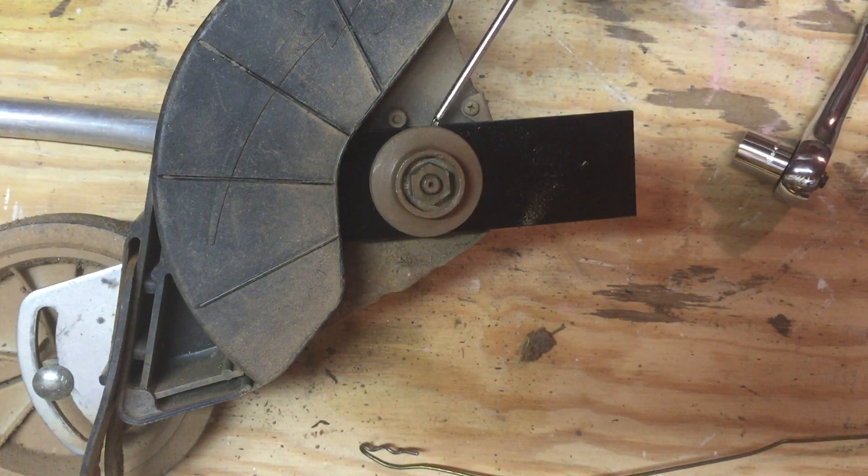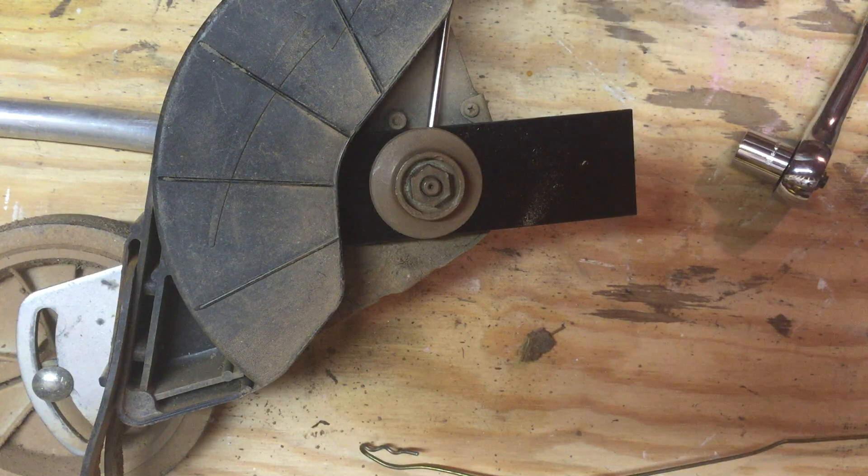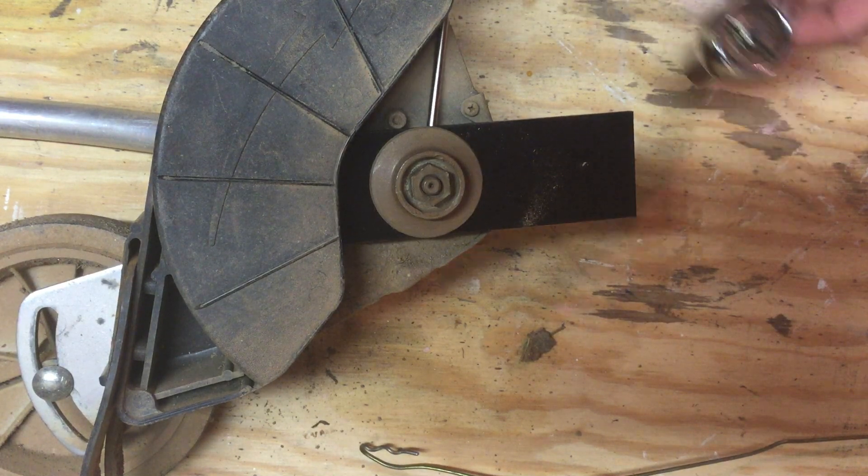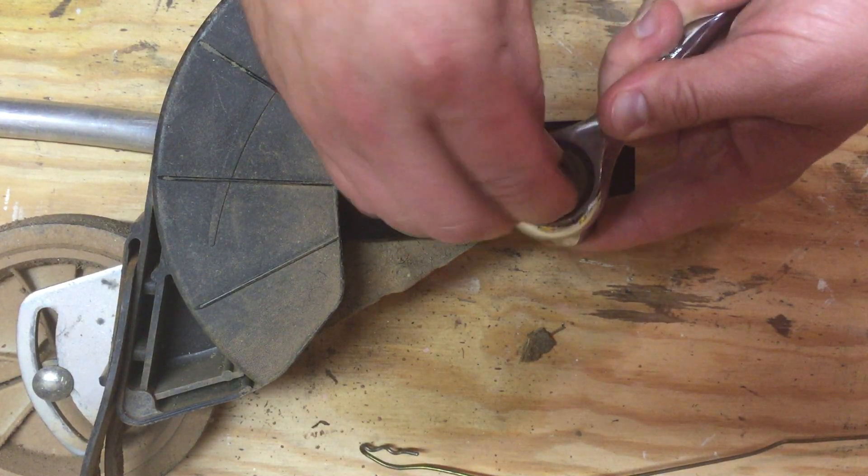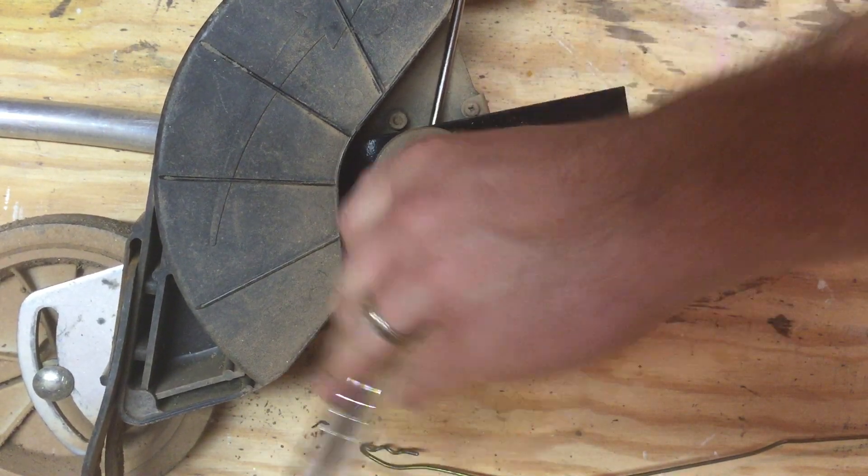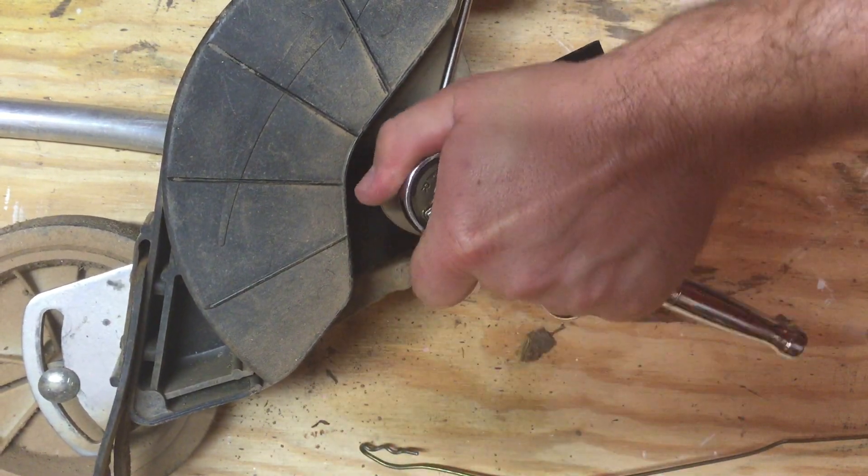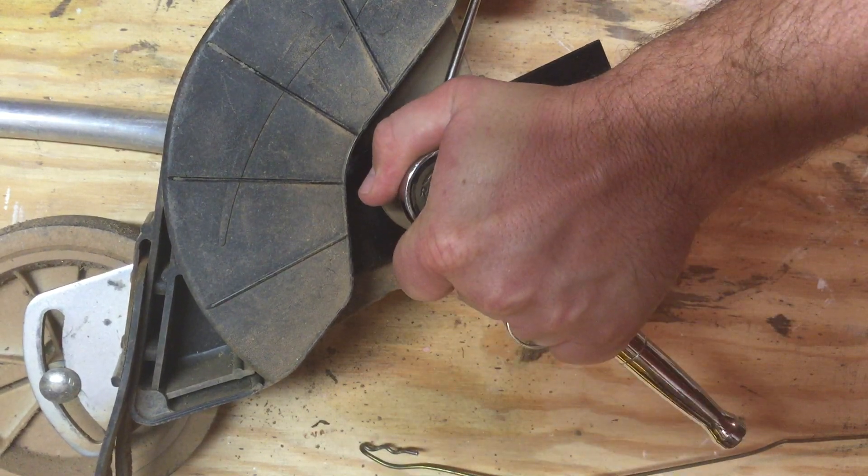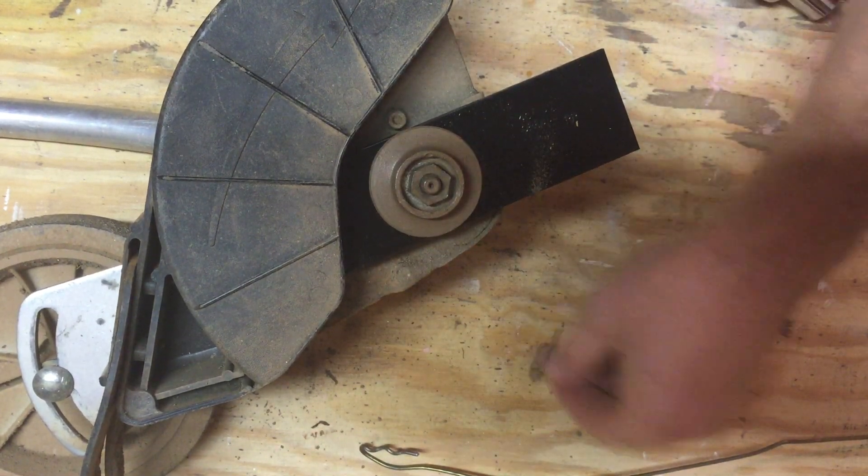So finger tighten your nut. Put your screwdriver back in the hole. Reverse the direction of your socket. And tighten it down. You can go ahead and get it down pretty tight. But know that the split pin is going to hold it in place.